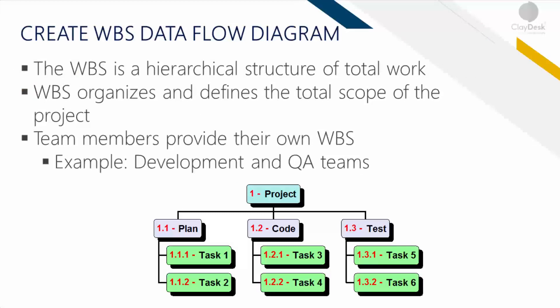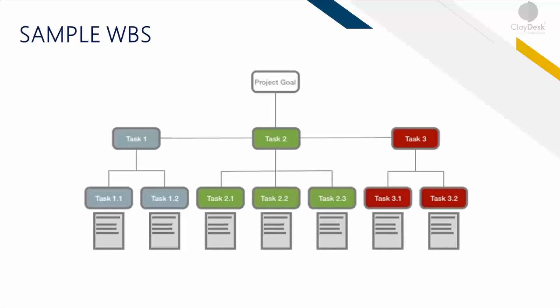The work breakdown structure is simply the process of subdividing project deliverables. Here's a simple WBS data flow diagram — it is a hierarchical decomposition of the total scope of work to be carried out by the project team to accomplish objectives and create required deliverables. Here's a sample WBS: you have the value management system project on top, divided into needs assessment, standards development, and so on. The needs assessment has further sub-tasks, with labels going from 1 to 1.1 and then 1.1.1 and so forth.